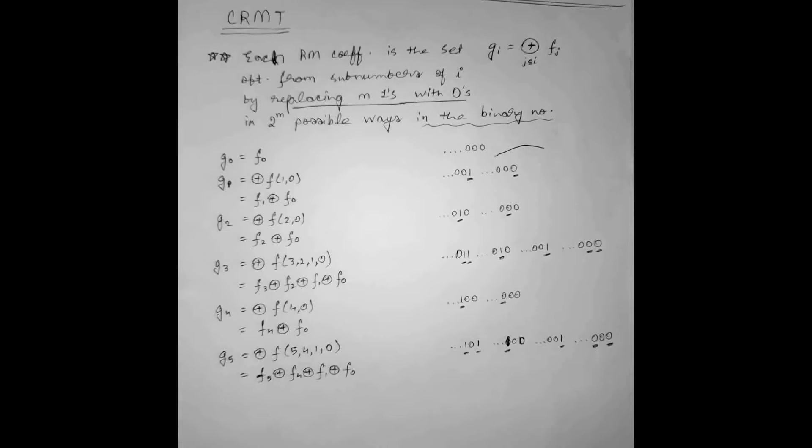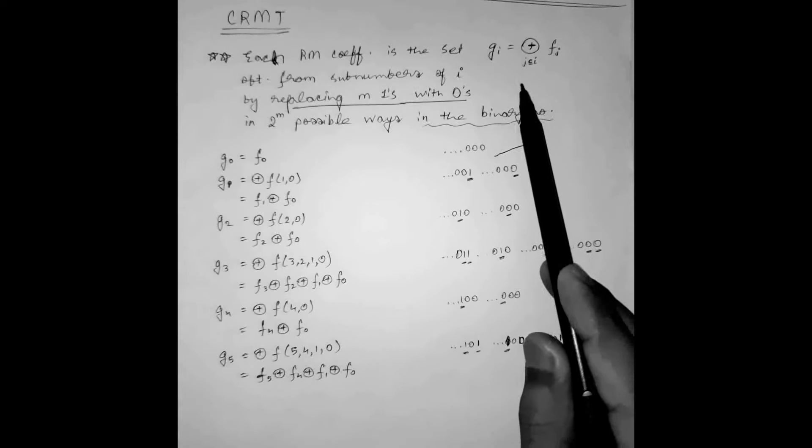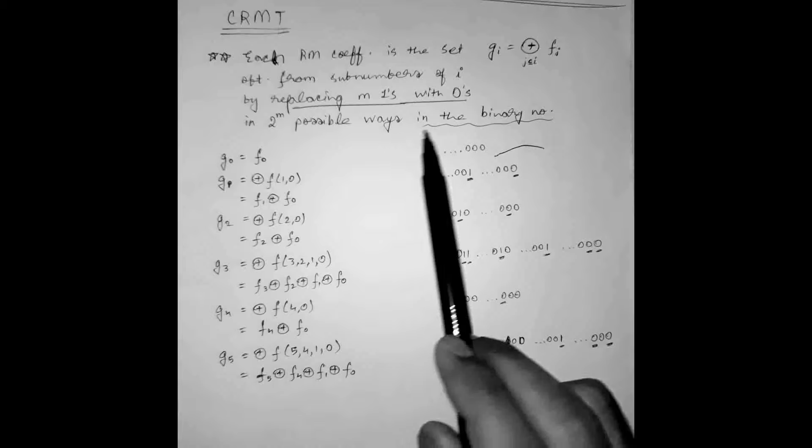Now without any further beating around the bush, let me discuss the actual step. Each Reed Muller coefficient GI is equal to XOR J subset of I FJ obtained from